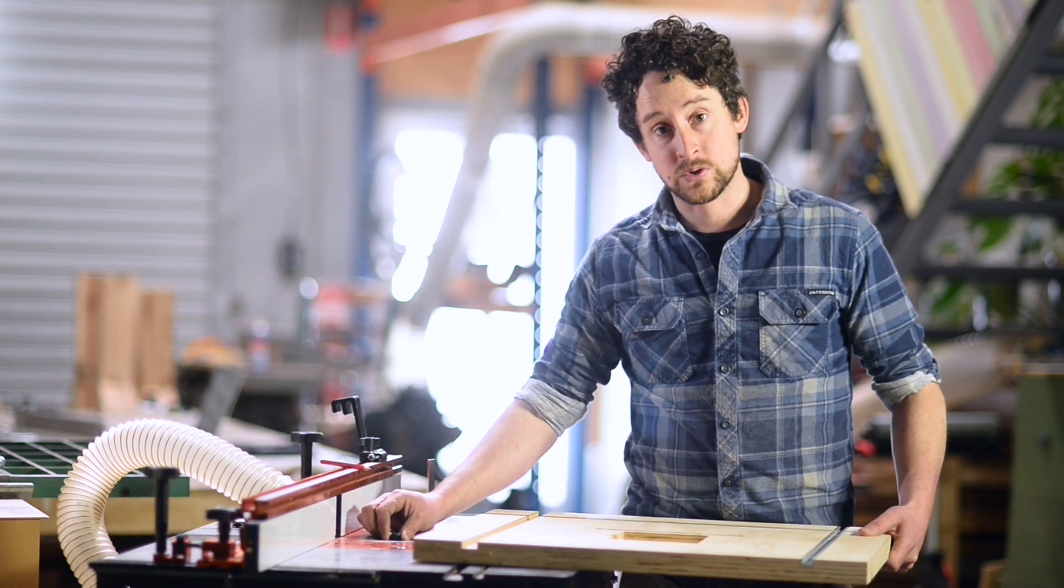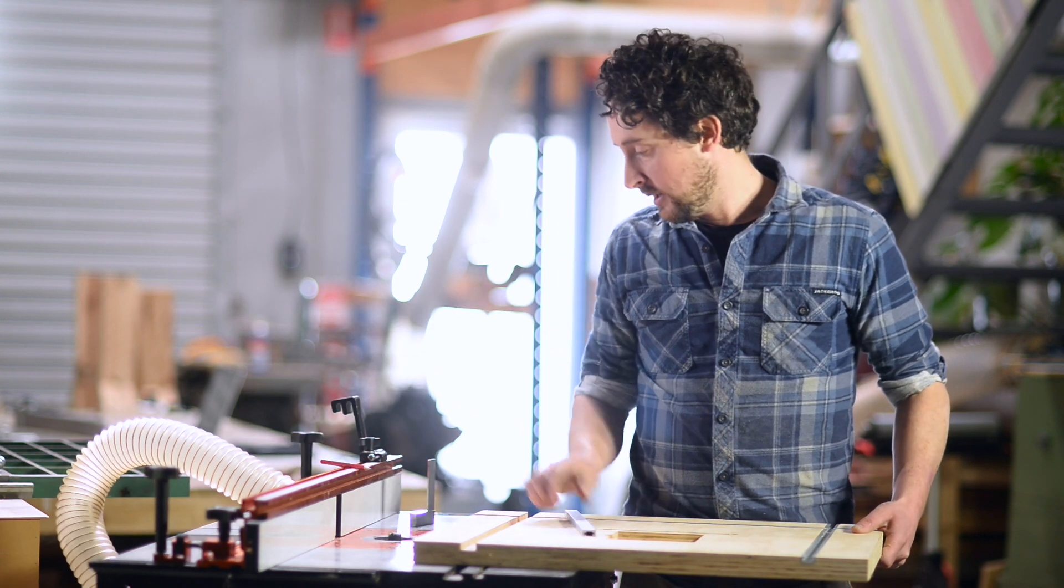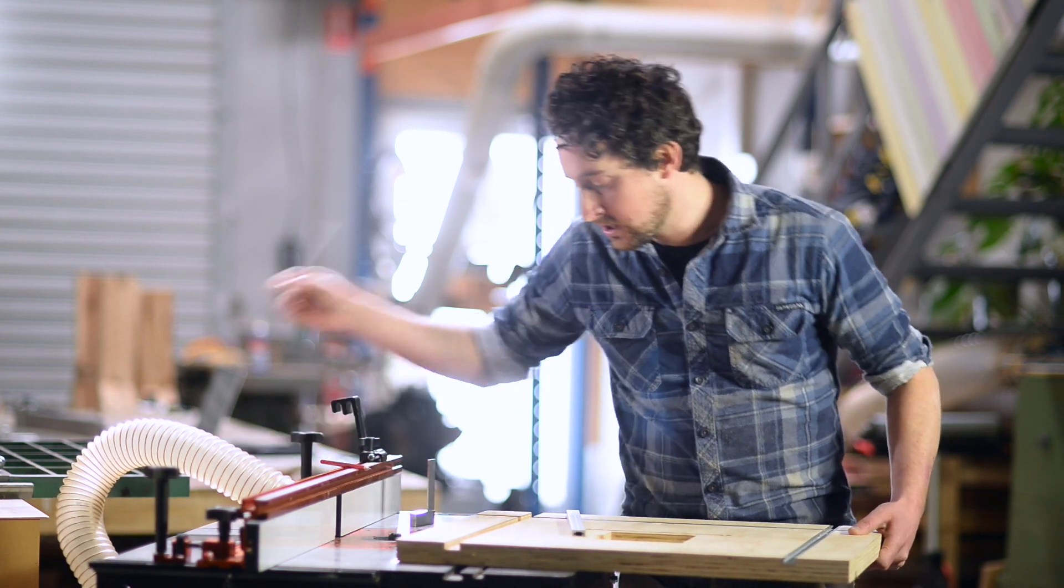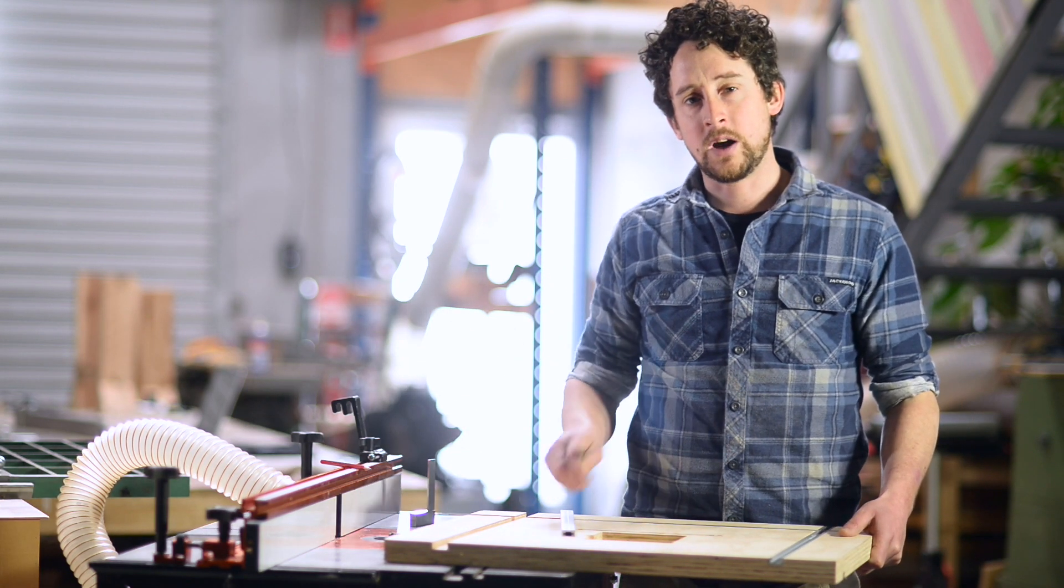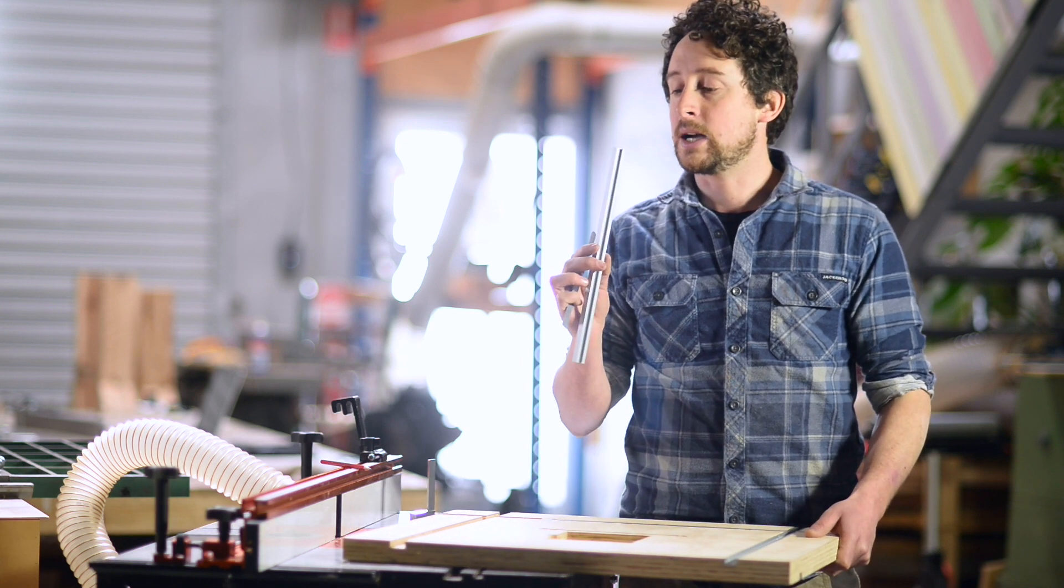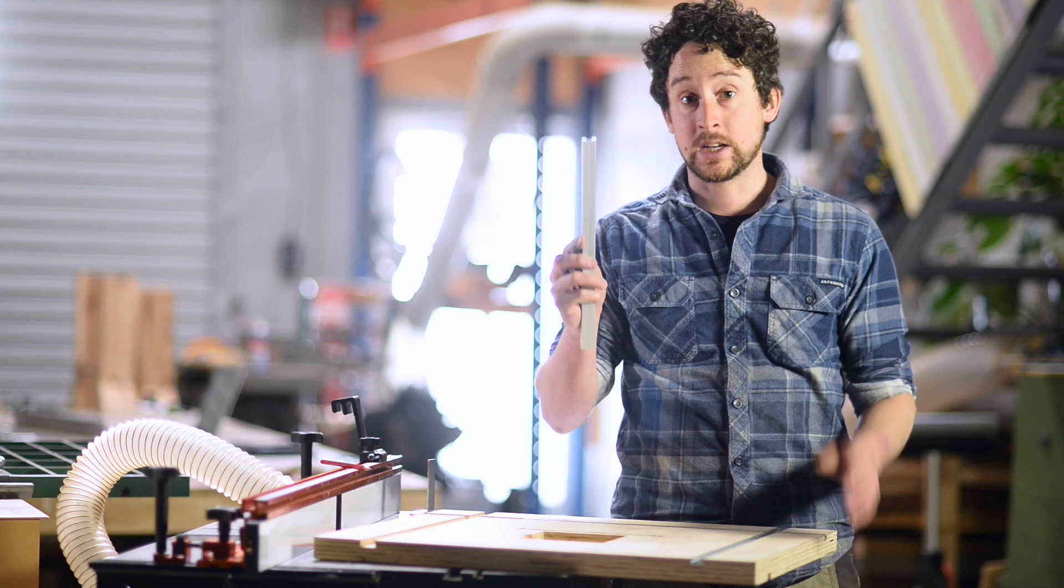I'm using a 19 mil straight bit and that matches this t-track perfectly. Just for your information, the depth of these holes is approximately 9.5 or 10 mil. I'm not exactly sure. I haven't checked it more accurately because I've always just sized it directly to the t-track.